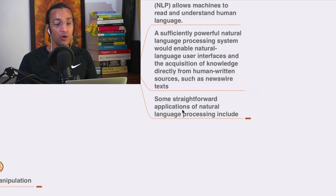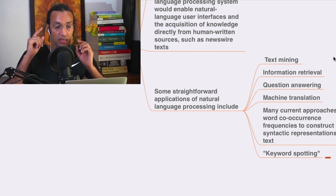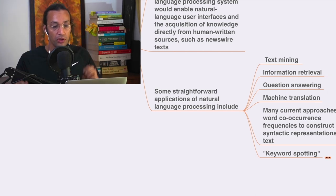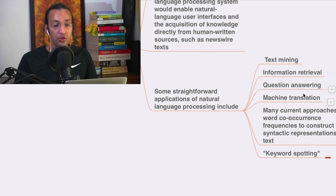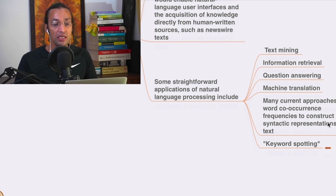Some straightforward applications of natural language processing include text mining, that is the application of natural language information retrieval, question answering, and machine translation. Many current approaches use word co-occurrence frequency to construct a semantic representation of text.